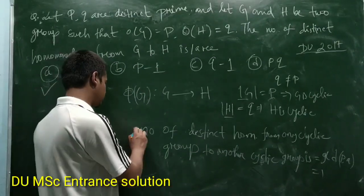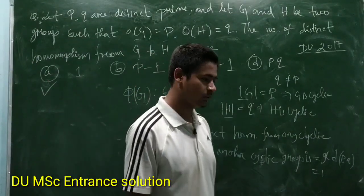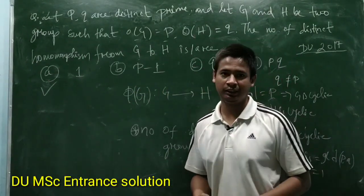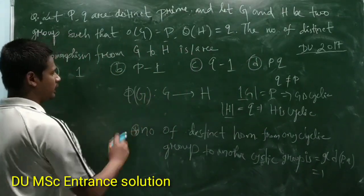See, you have to find homomorphism from G to H. Now,